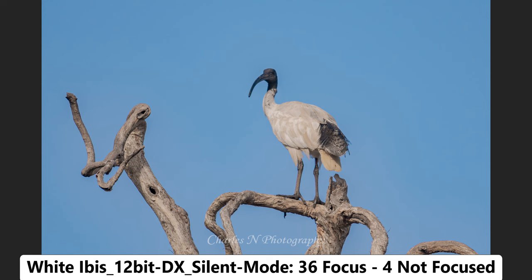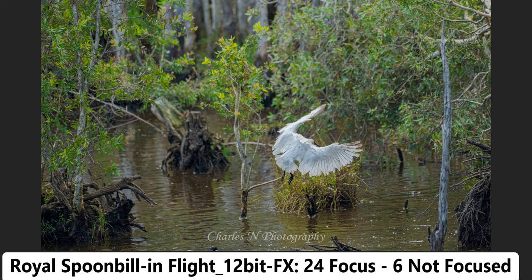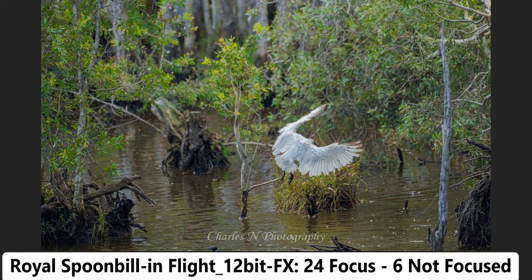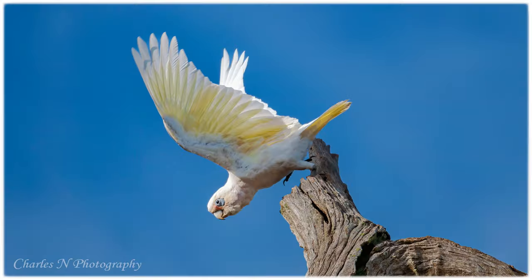A set of 40 images of a white ibis on top of a tall dead tree, taken in 12-bit DX mode with silent photography: 36 in focus, 4 out of focus. All previous photos were on a tripod, giving a clear advantage. But this set of 30 images of a royal spoonbill that took flight right in front of me were taken handheld — I tracked it in 12-bit FX mode, getting 24 in focus and 6 not in focus. Most misses were because the bird banked sharply to the right behind a clump of dead trees.